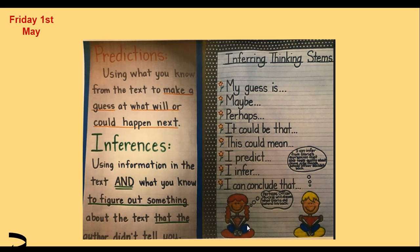Let's remember that — looking to this side over here. So these are your thinking stems. These are some of the ways that you can start your sentences to make your inferences. I like these ones the most: 'My guess is' — that's a really good one — 'maybe', 'perhaps', 'I infer', or 'I conclude that'. They're my favourite ones out of those stems.